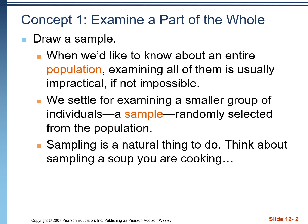When we want to gain insight about a population, examining everyone in the whole group is usually impractical, if not impossible. Think about polling a presidential election — it's not possible to go to every voter in the country and ask them who they're going to vote for. Instead, we settle for looking at a smaller group called a sample. As long as this group is randomly selected and representative of the nation as a whole, it should give us an idea of how the entire population will be voting.